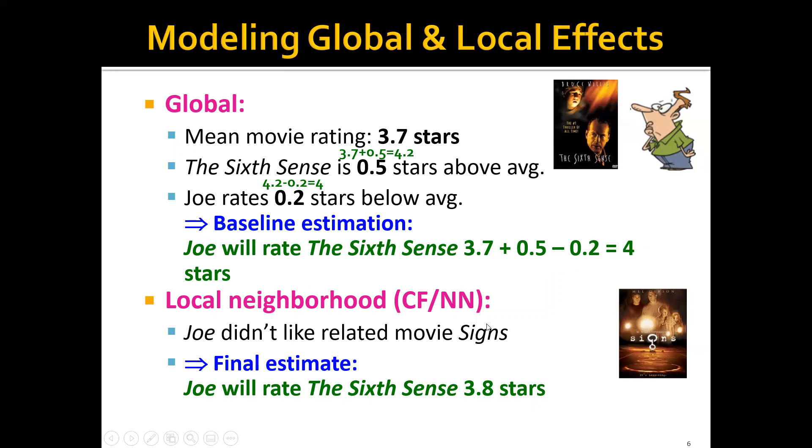And for the local methods, we can use the collaborative filtering approach that we have talked about before. For example, let's say that Joe actually didn't quite like the related movie Signs. Therefore, we can further lower the estimated rating by a little bit and gives us a final estimate that Joe will rate the movie The Sixth Sense 3.8 stars.